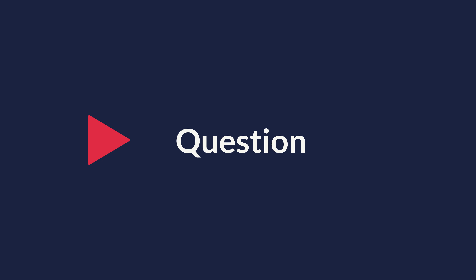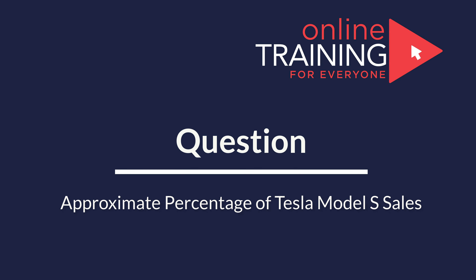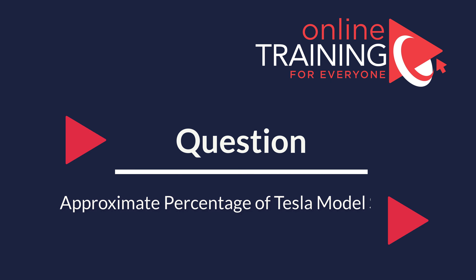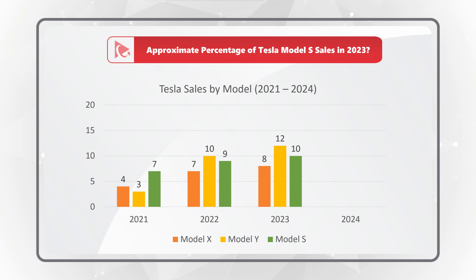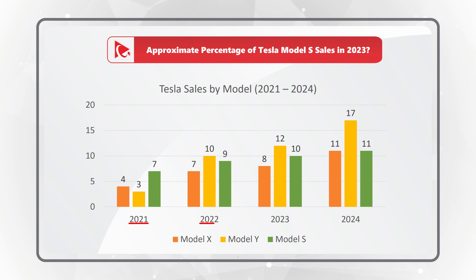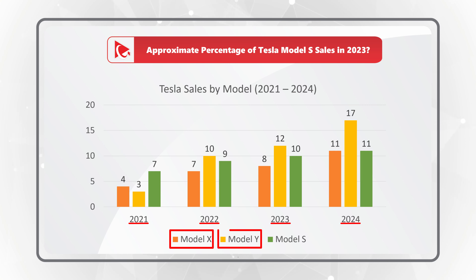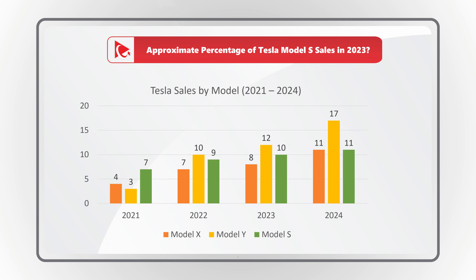Here is a very interesting question where you need to calculate the percentage of Tesla Model S sales in 2023. You are presented with a bar chart showing sales for the periods of 2021, 2022, 2023, and 2024, and each section has sales for Model X, Model Y, and Model S. Based on the information presented, you need to determine the correct percentage out of four choices.